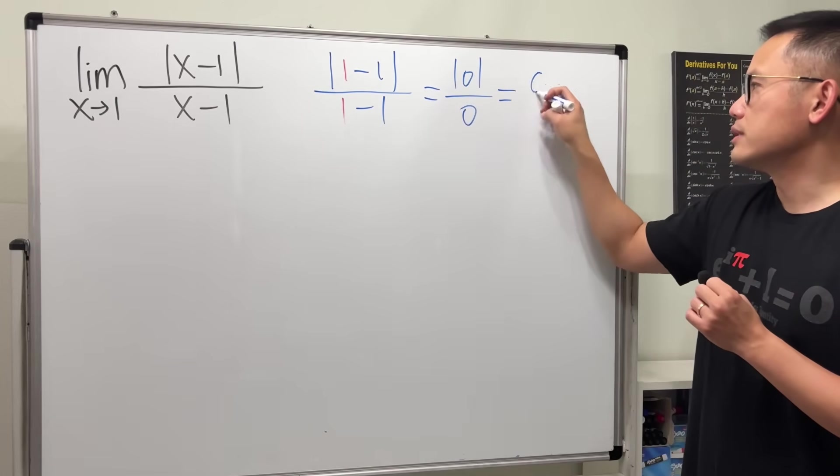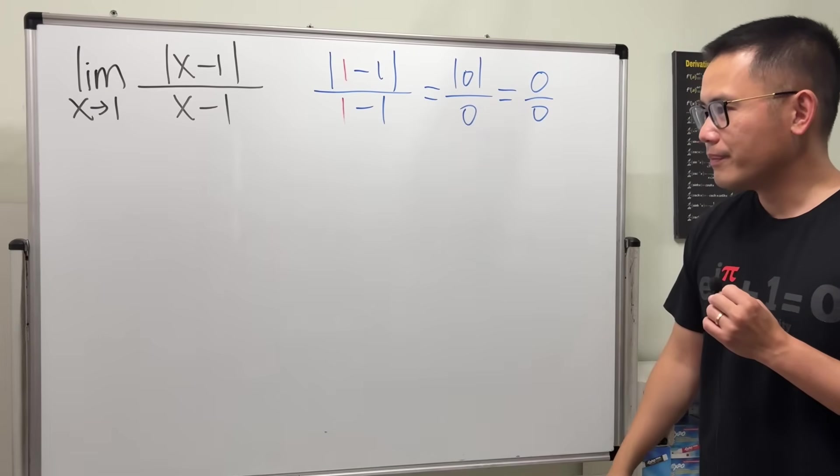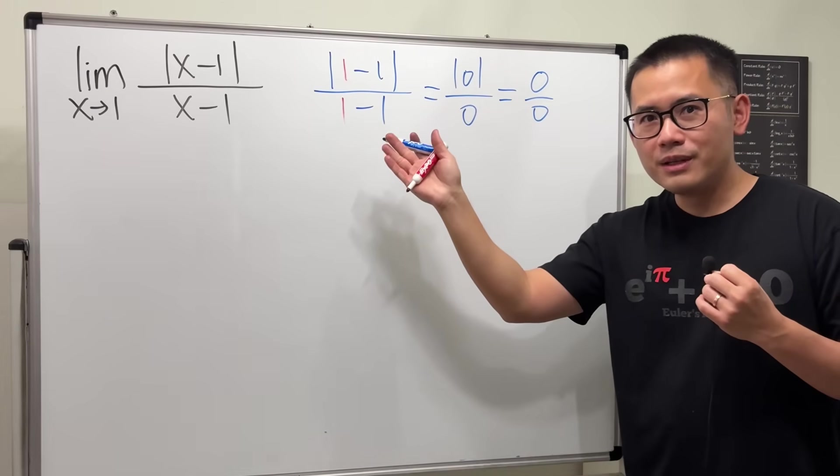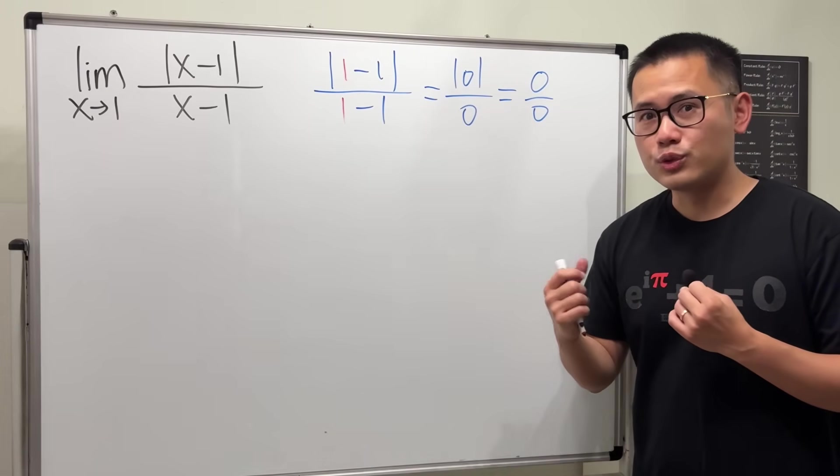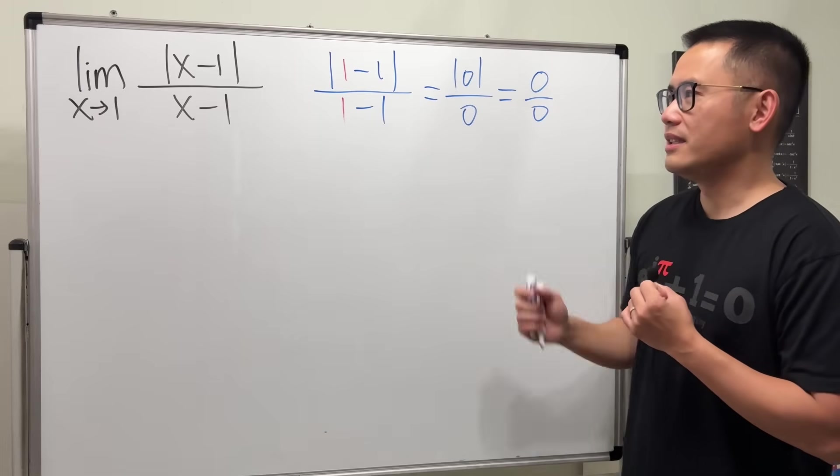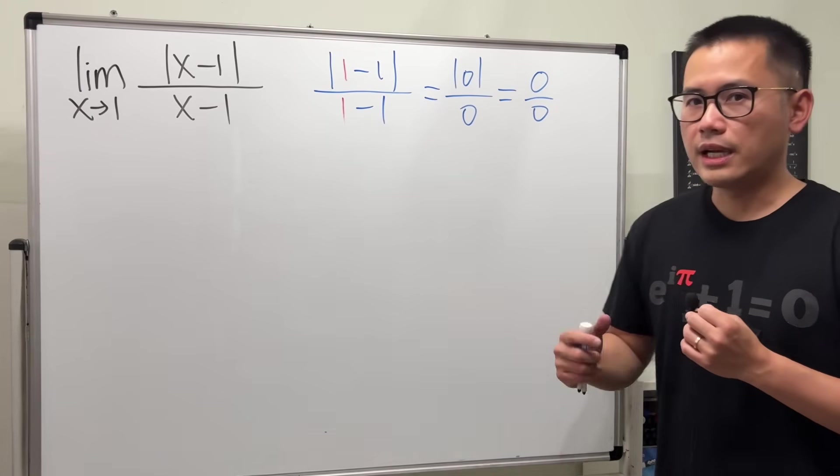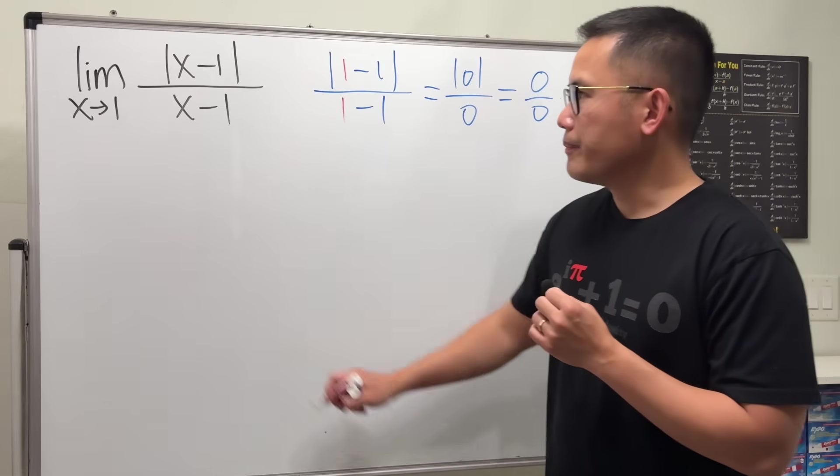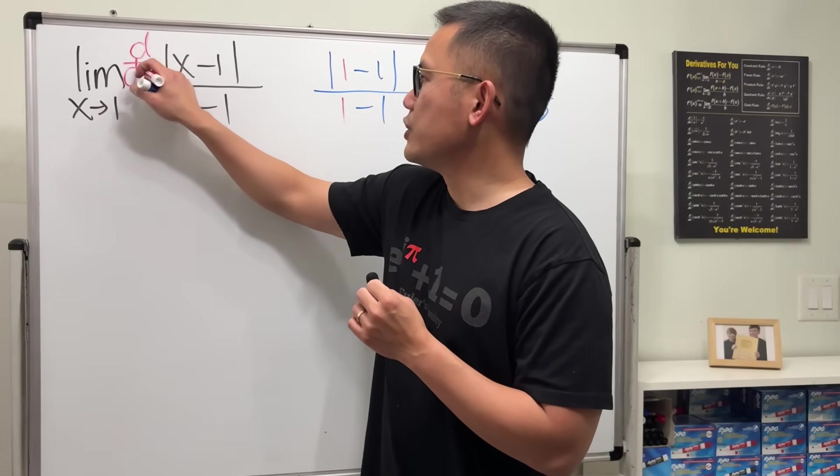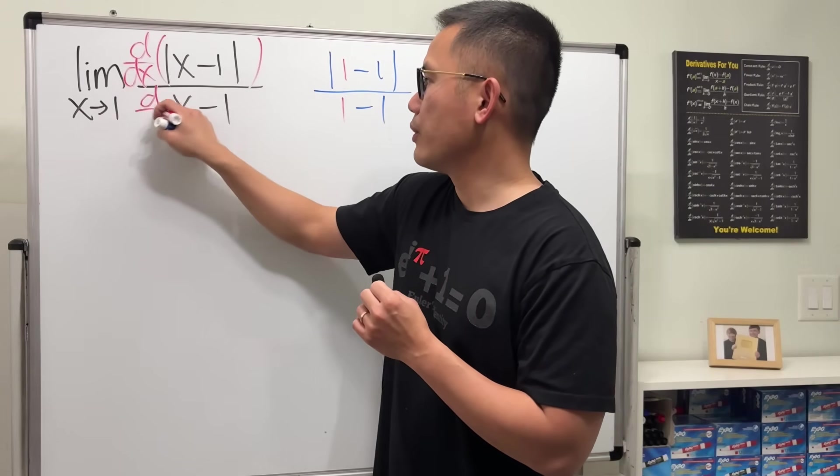Absolute value of 0 is 0. On the bottom, it's also 0. When we're doing limits, if you get 0 over 0, we cannot draw any conclusion yet. This is indeterminate form, which tells us we have to do more work. It's nice because we can actually use L'Hôpital's rule. So let's go ahead and proceed by differentiating the top and also the bottom.